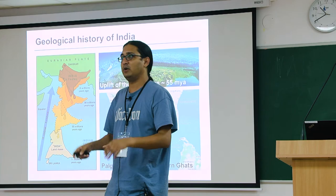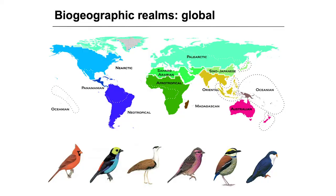Let's look at what are called biogeographic realms — areas of the world in which you find species with very similar evolutionary histories. There are a large number of biogeographic realms: the Nearctic (North America, with species like the Cardinal), the Neotropical (Tanagers), the Saharo-Arabian (Bustards), the Palearctic (Finches and Tits), the Oriental (Pittas), and the Oceanic and Australian realms (parrots and birds of paradise). The world has been divided into these realms based on the flora and fauna found there.